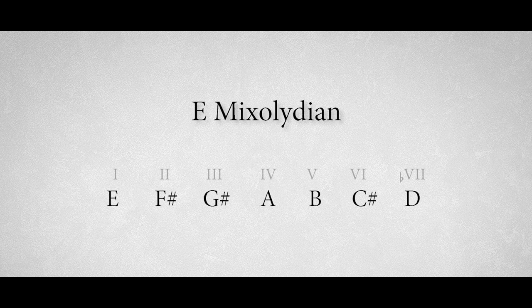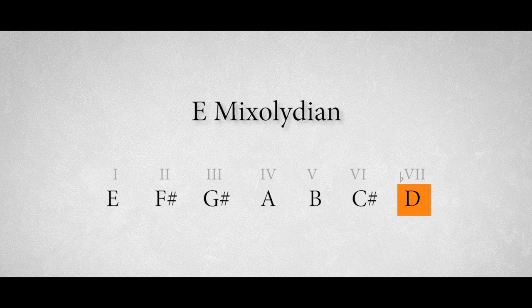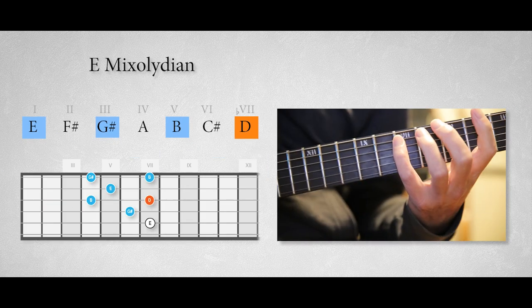E Mixolydian is the fifth mode of the A major scale, and has a typical flattened seventh degree, the note D. Let's add this to the E major triad arpeggio. And by the way, this is of course the dominant seventh arpeggio.